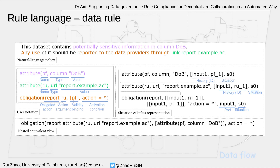Our rule language contains two parts. One is the data rule, and the other is the flow rule. This figure shows some examples of how a data rule looks. It basically contains an attribute and an obligation construct. Each data rule contains several attributes and several obligations, and they are used during reasoning when we encounter the flow rules. As we can see in this figure, the attributes and obligations correspond to the natural language sentences but with a more formal representation.